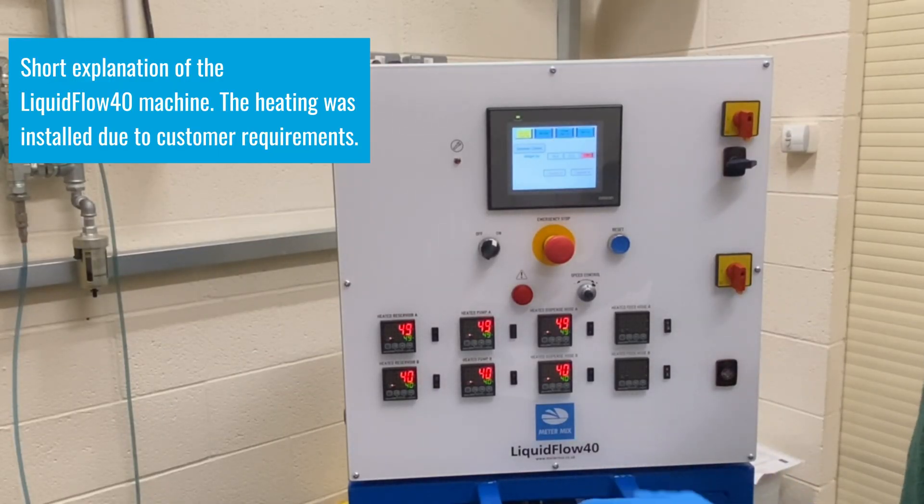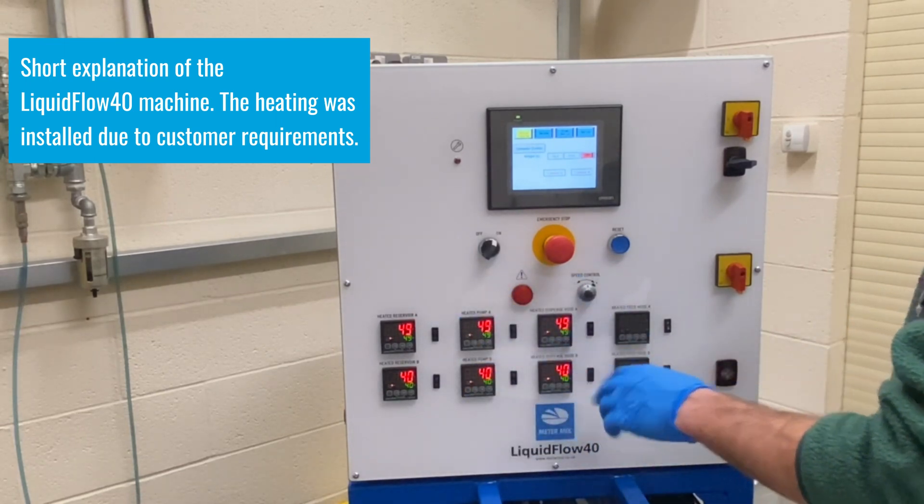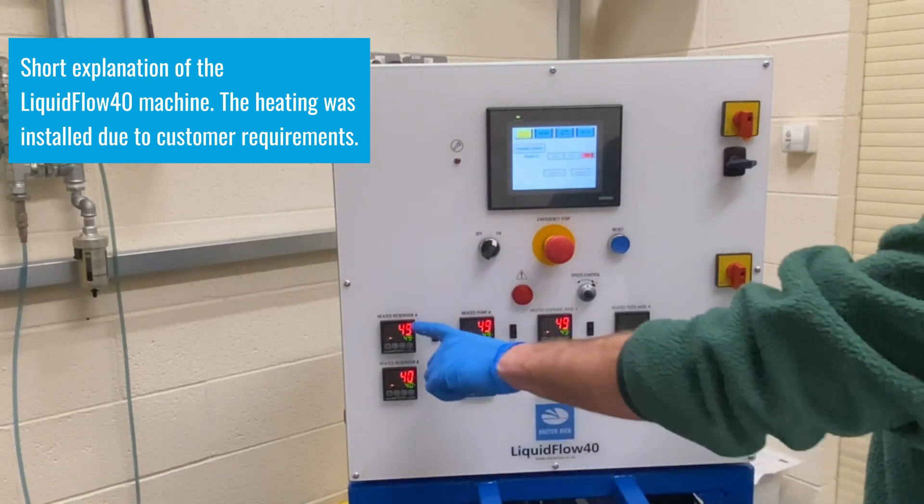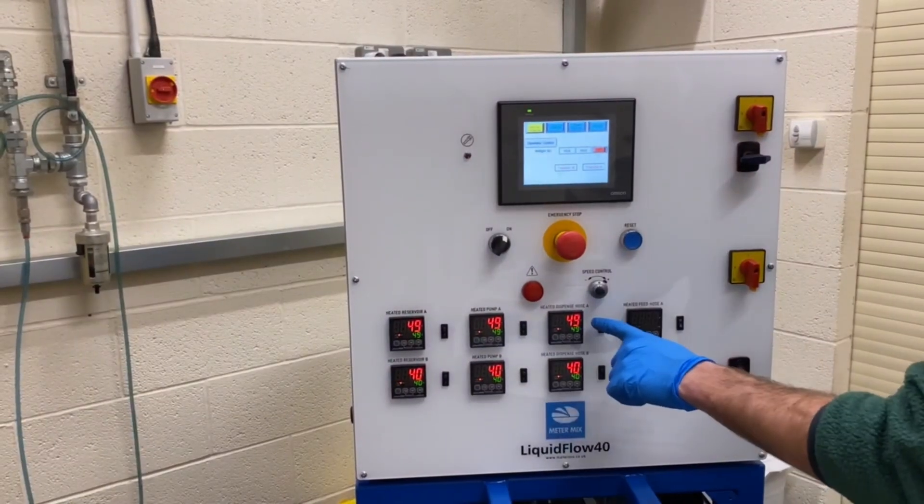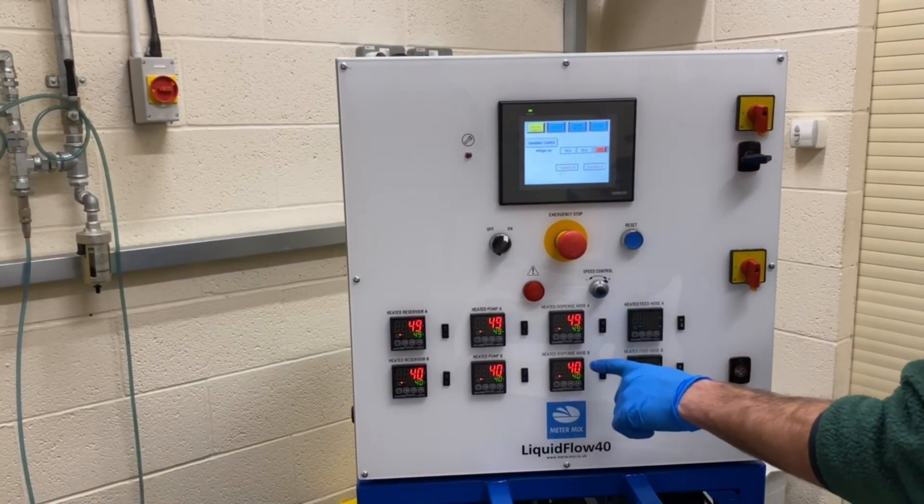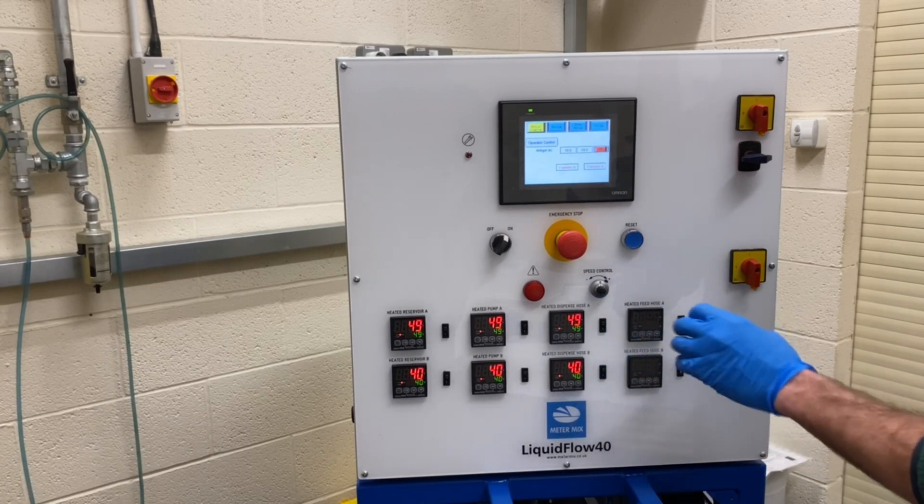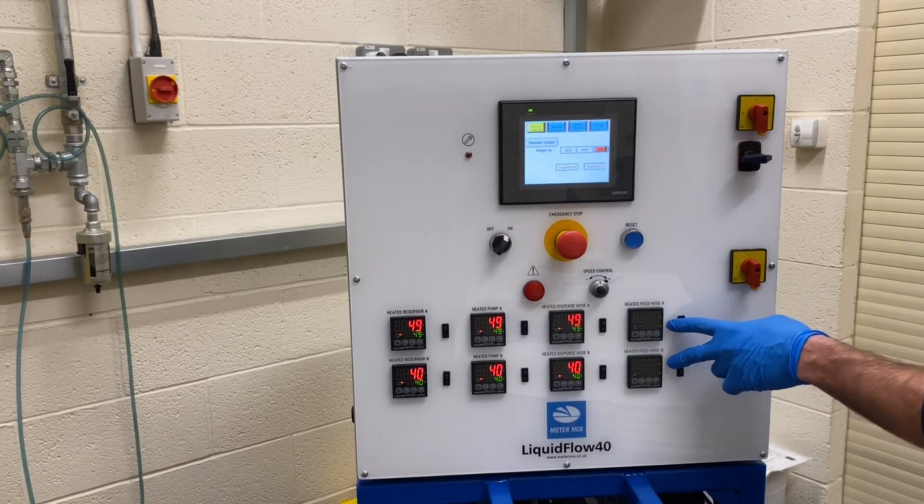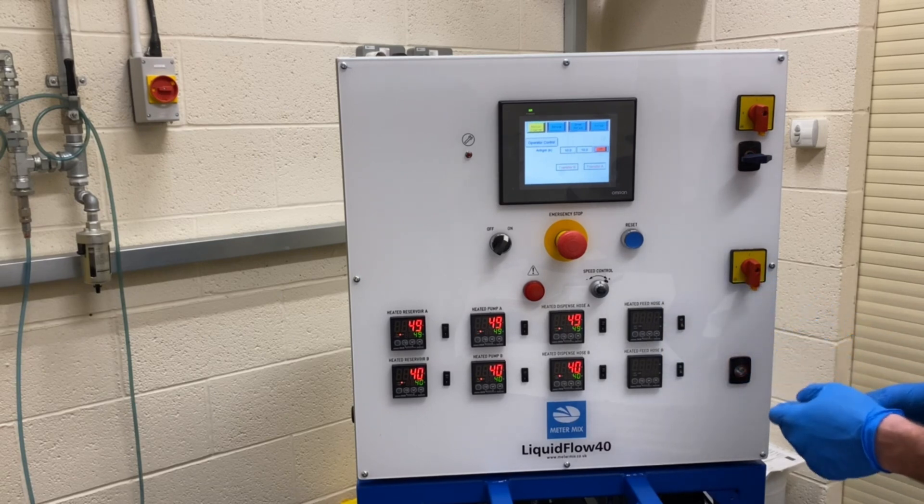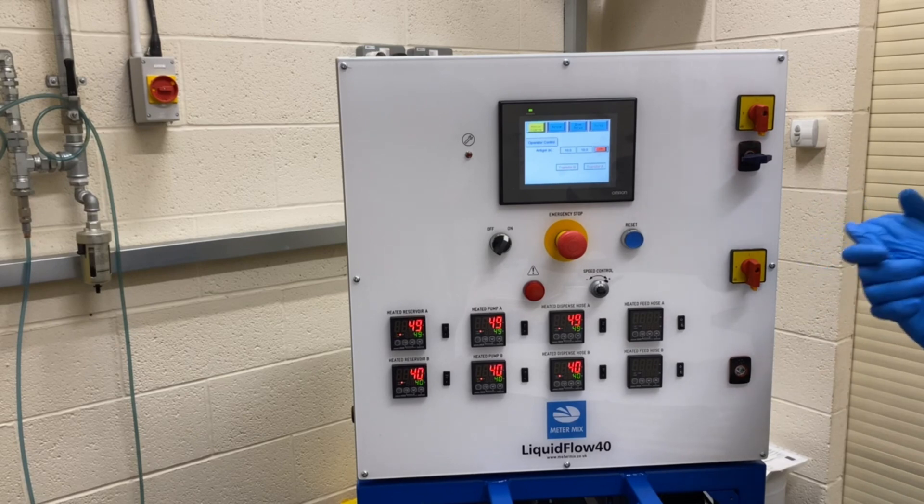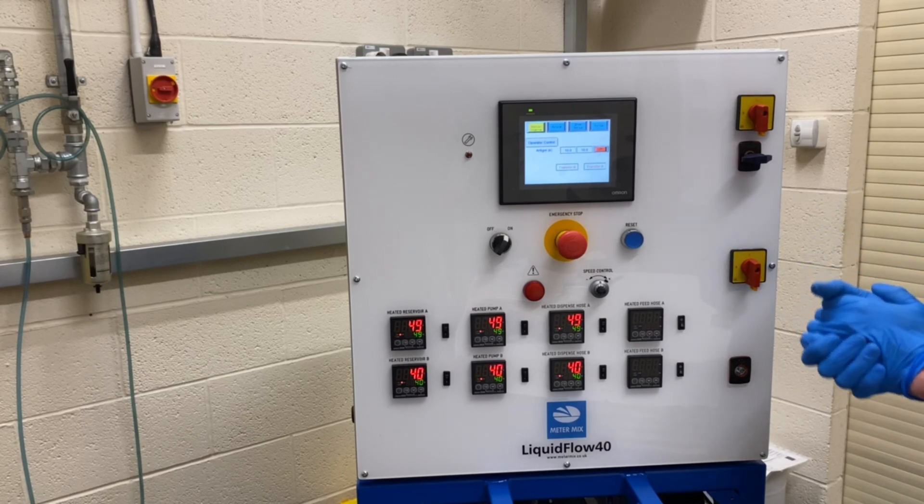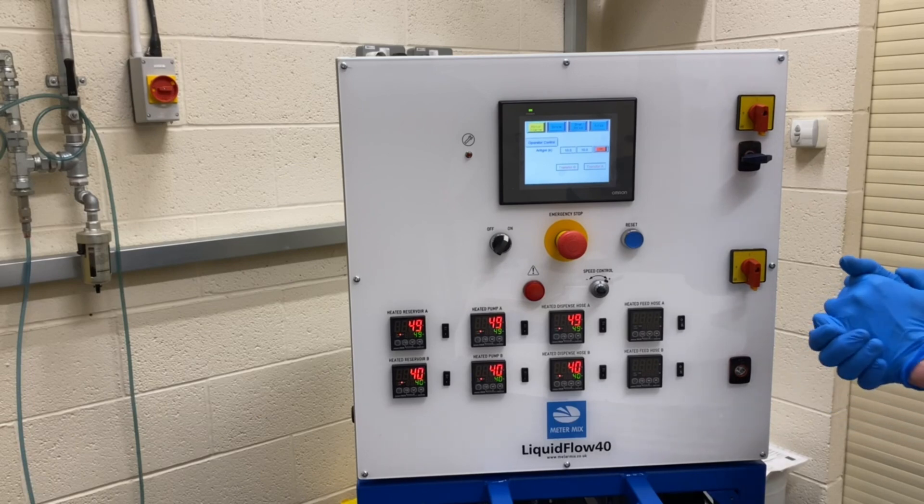It's a liquid flow 40 with heating circuits on everything. We have heated reservoirs on the A and the B, heated pumps on the A and the B, and heated dispense hoses on the A and B, along with heated feed hoses for the transfer pumps. It's coming from the IVC containers and automatically pumped off into our reservoirs. The material is heated from the storage containers all the way to the dispense valve.